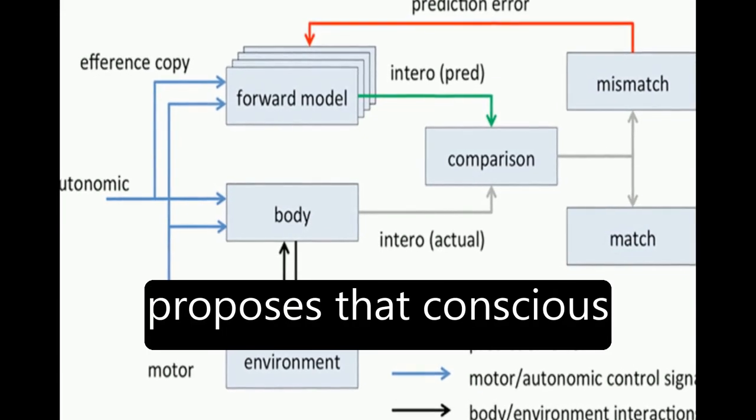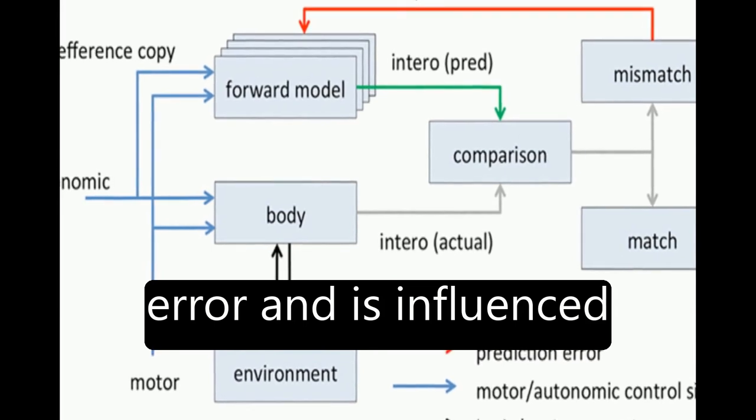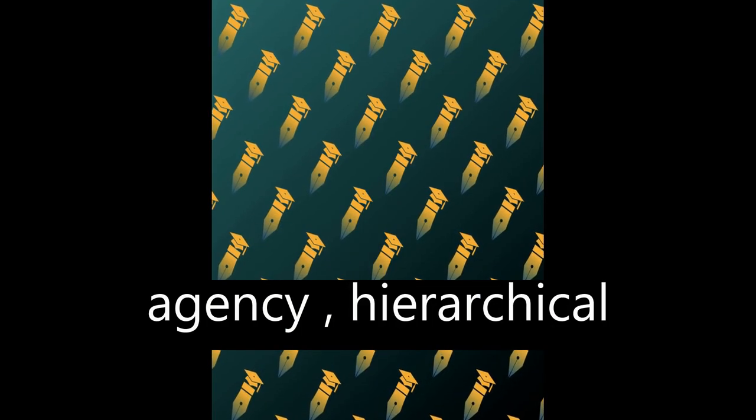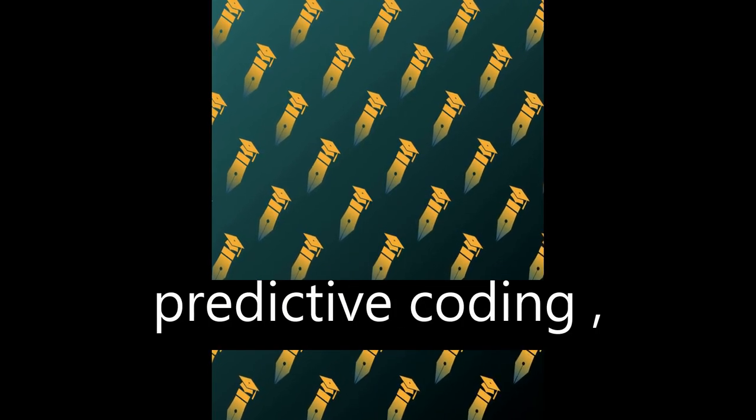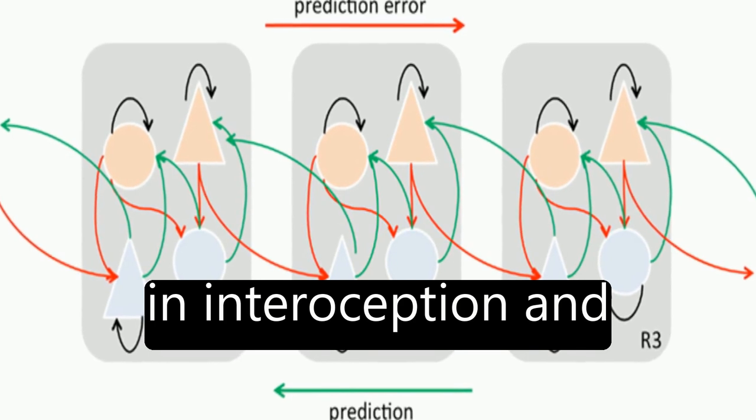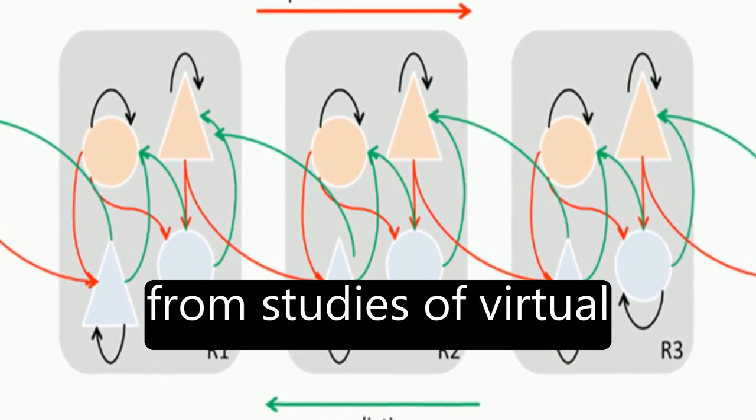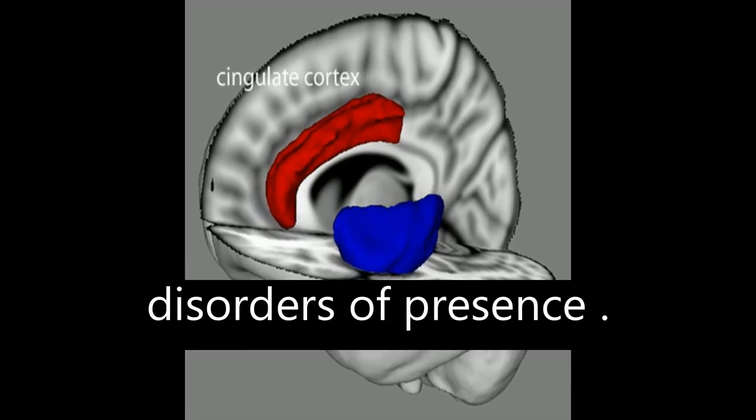The theoretical model proposes that conscious presence is based on interoceptive prediction error and is influenced by predictive models of agency, hierarchical predictive coding, dopaminergic signaling in cortex, the role of the anterior insular cortex in interoception and emotion, and cognitive neuroscience evidence from studies of virtual reality and psychiatric disorders of presence.